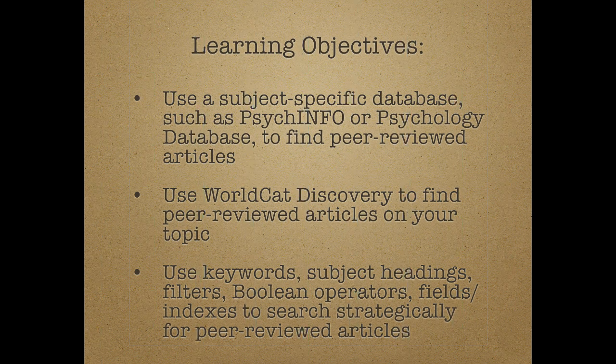After you finish watching this tutorial you should be able to do the following things: number one, use a subject-specific database such as PsycInfo or Psychology Database to find the peer-reviewed articles you need for your projects; number two, use WorldCat Discovery to find peer-reviewed articles on your topic; and number three, use keywords, subject headings, filters, Boolean operators, and fields or indexes to search strategically for peer-reviewed articles.